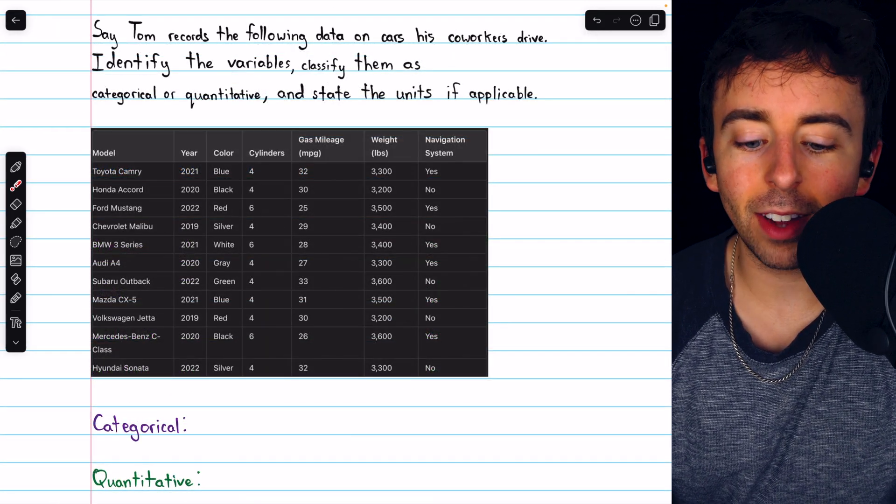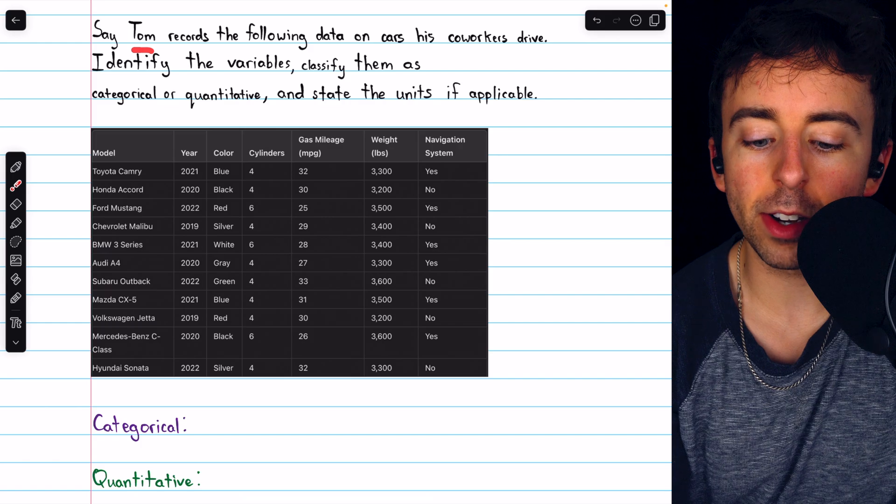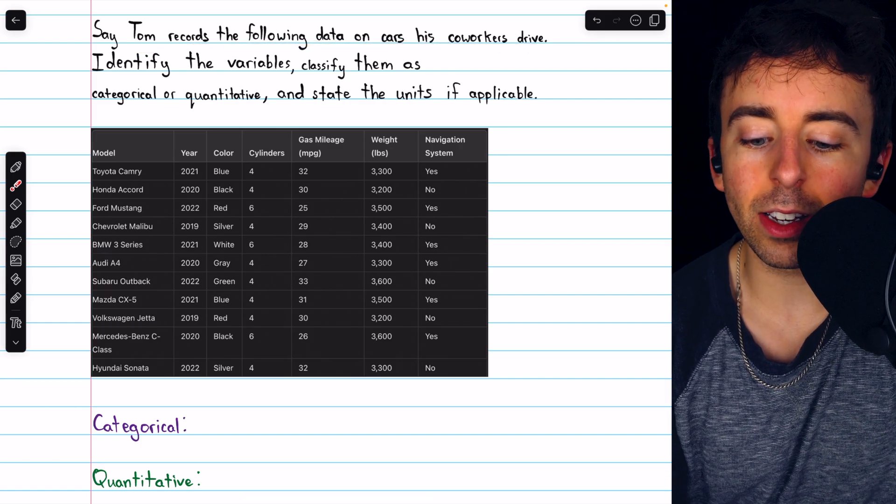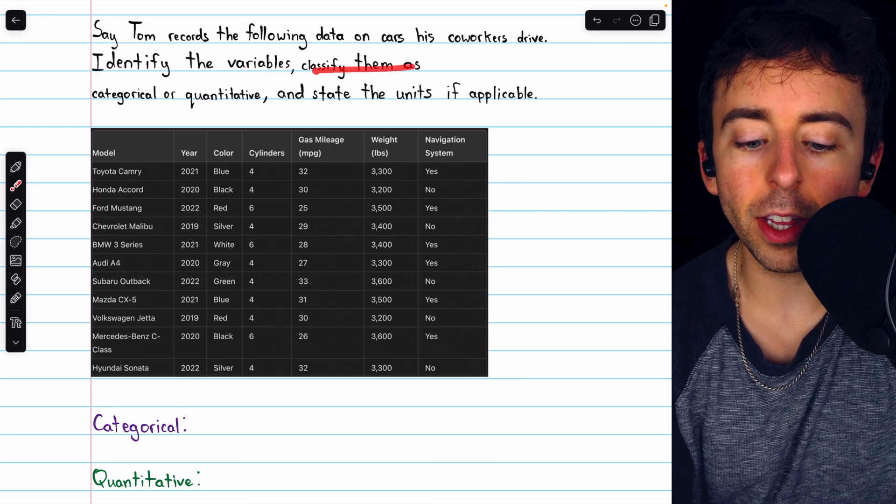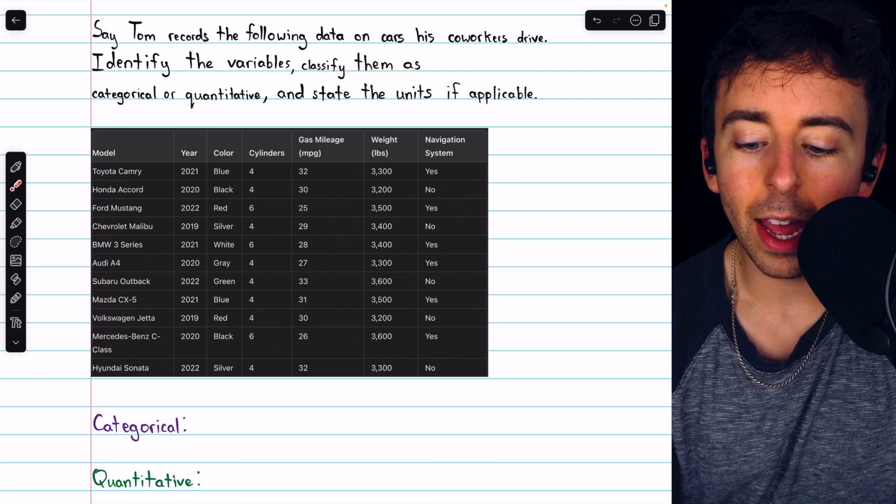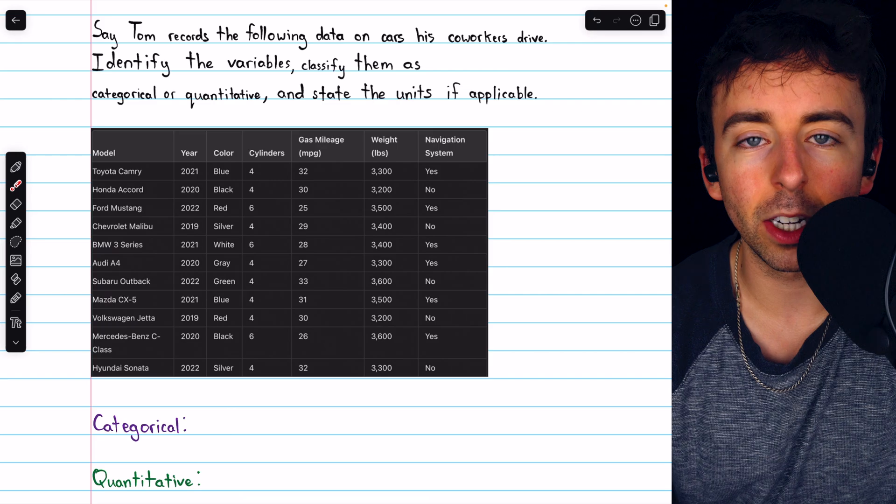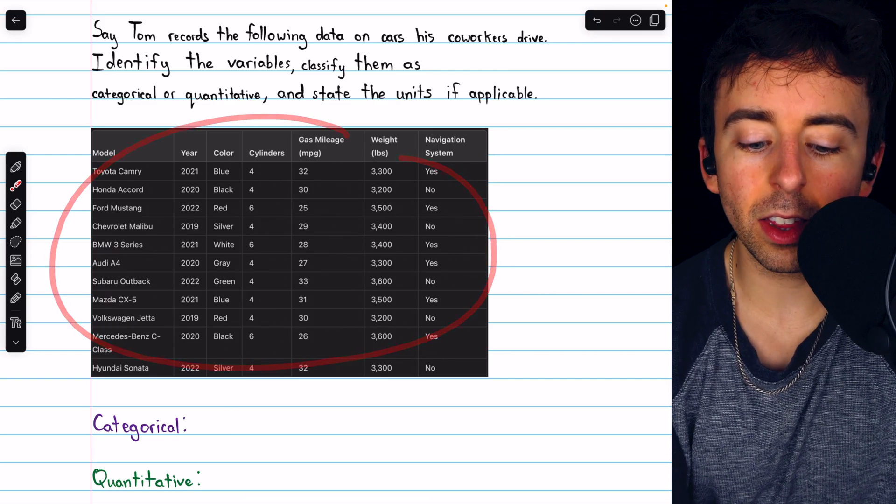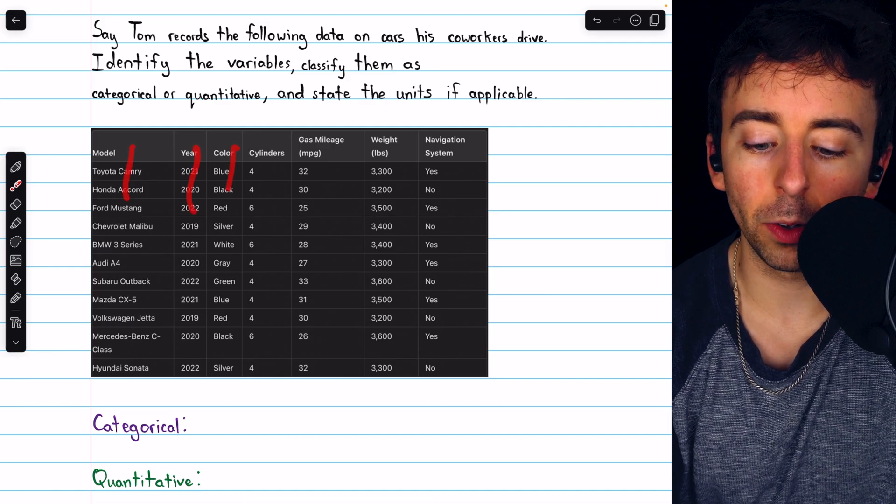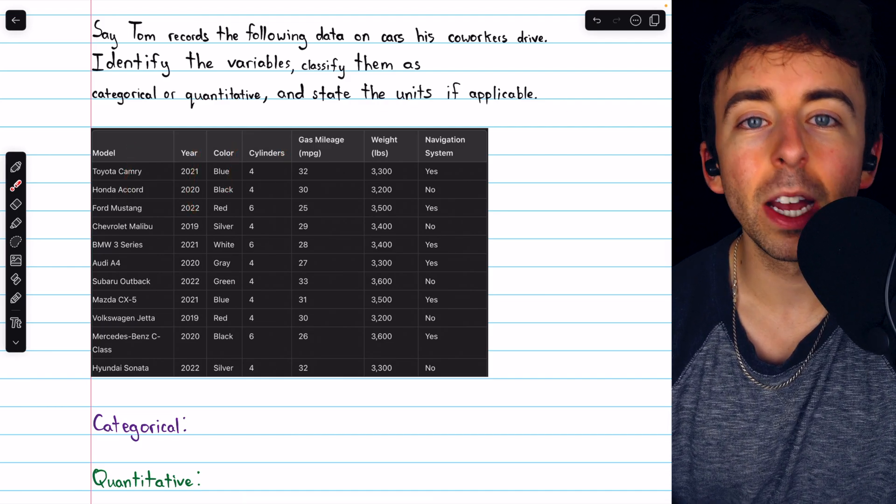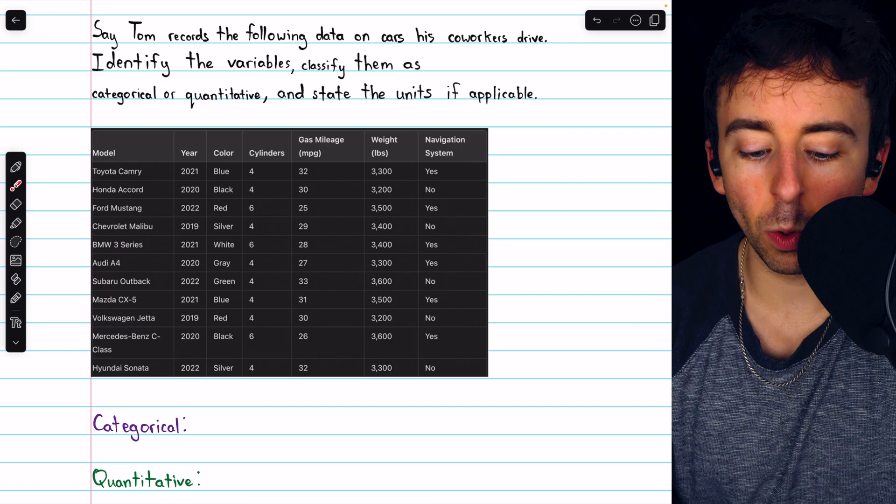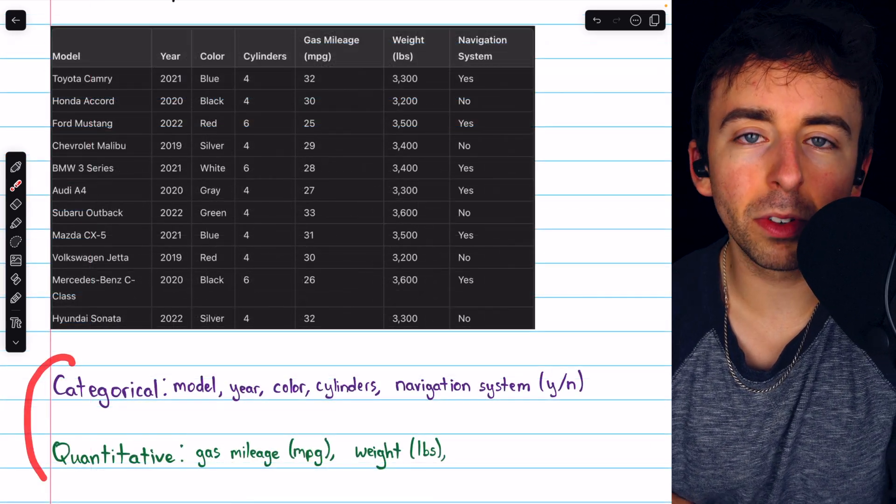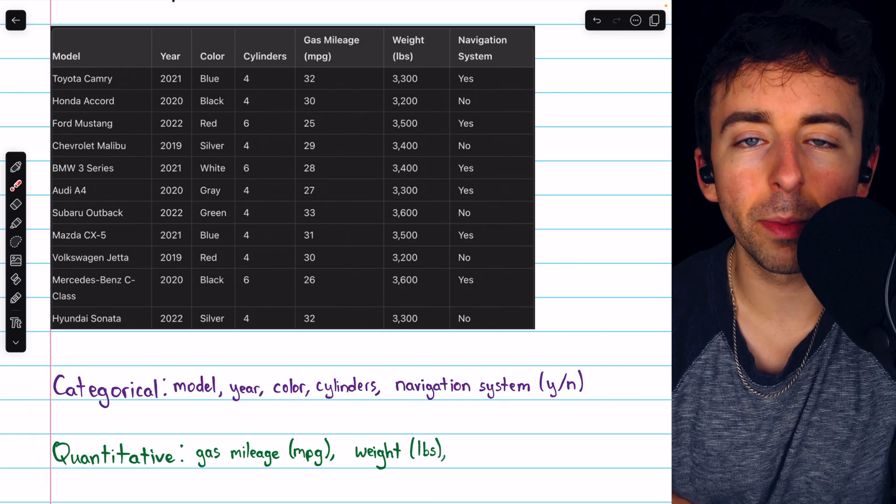Let's finish with the data we were discussing last time. Say that our friend Tom records the following data on cars that his co-workers drive. We're going to identify the variables, classify them as categorical or quantitative, and state the units if applicable. Remember that quantitative data will have units. In our data table, we can see that the variables are the columns, model, year, color, and so on. So take a minute and try to identify each one as categorical or quantitative. I'll put the answers on screen now.